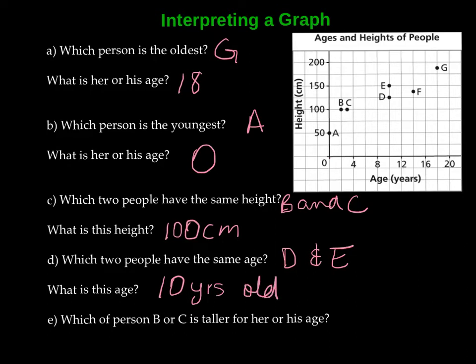Okay, now which of person B or C is taller for her age? Okay, so we're going to notice here B and C are right next to each other. Now one person is younger and they're the same height as someone who's older than them. So the answer to this one is B, because they are younger.